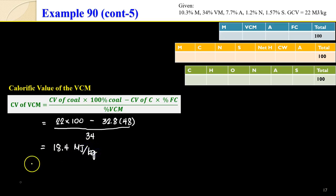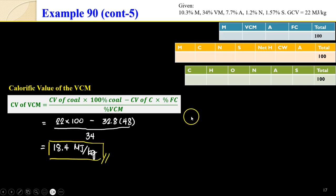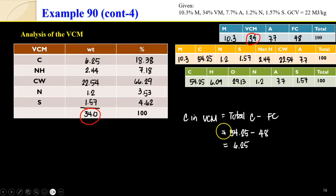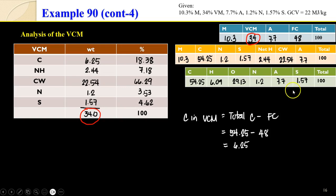So 18.4 MJ/kg is the calorific value of the volatile combustible matter. To summarize: for proximate analysis, you need moisture, VCM, ash, and fixed carbon. For modified analysis: moisture, carbon, nitrogen, sulfur, net hydrogen, combined water, and ash. For ultimate analysis: carbon, hydrogen, oxygen, nitrogen, ash, and sulfur. Thank you very much, good luck.